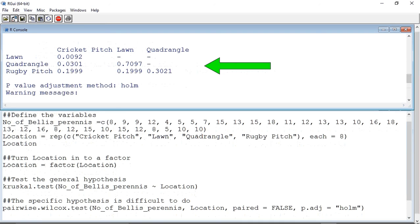Using our transition value of 0.05, we can see there is a significant difference between the lawn and the cricket pitch, with a probability value of 0.0092, and the quadrangle and the cricket pitch, with a probability value of 0.0301. All of the other comparisons appear to be not significant.